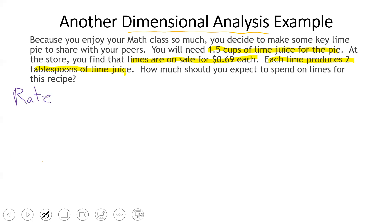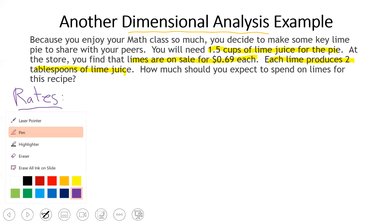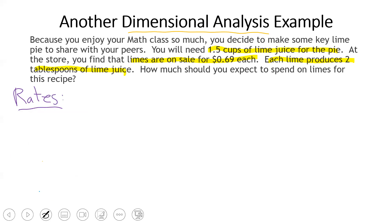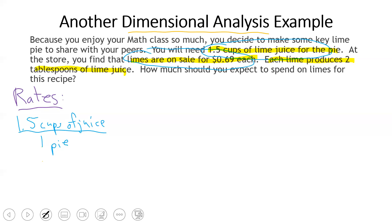Remember, a rate is a ratio of two quantities. Each piece of highlighted information can be set up as a rate. The first one: 1.5 cups of lime juice for the pie gives us the rate of 1.5 cups of juice per one pie. Next, limes are on sale for 69 cents each, which we write as 69 cents per one lime.